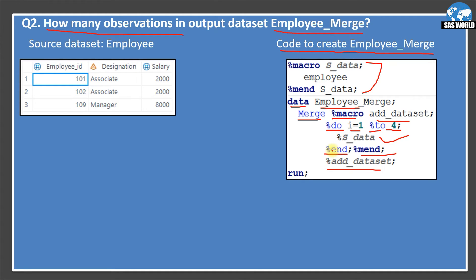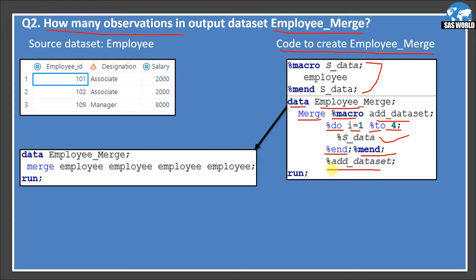A lot of things are happening here and it's quite confusing. If we simplify this — when you call %add_data_set, and since the macro part always runs before the data step, the macro section runs first. It will resolve to: employee employee employee employee — four times — because we are calling s_data in a loop from i equal 1 to 4. That's why we have four employee source data sets in the merge statement.